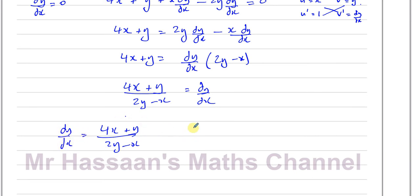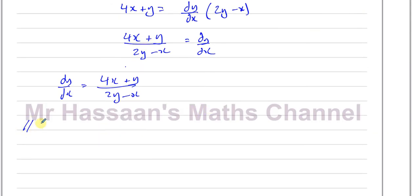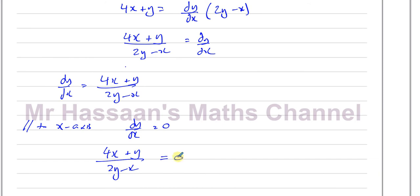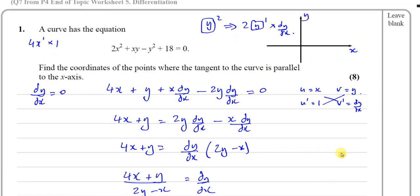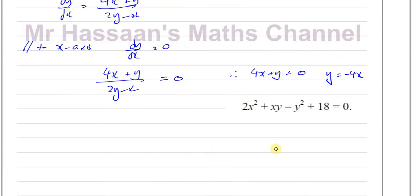We want to find where the tangent is parallel to the x-axis, meaning dy/dx equals zero. So (4x plus y) over (2y minus x) equals zero, which means the numerator 4x plus y equals zero. Therefore y equals negative 4x. Those are the points where the gradient equals zero. We solve these two equations simultaneously by substituting y equals negative 4x into the original curve equation.